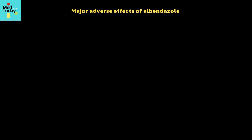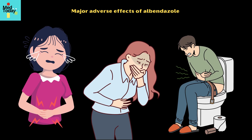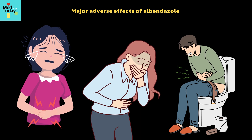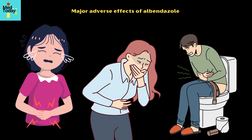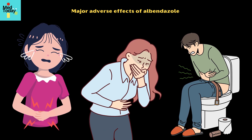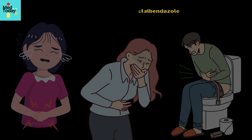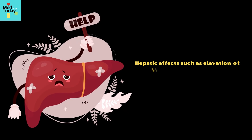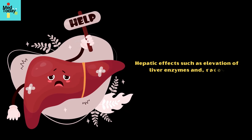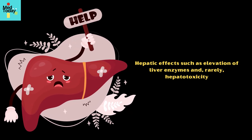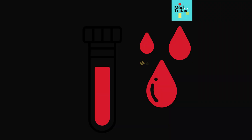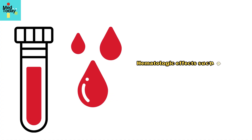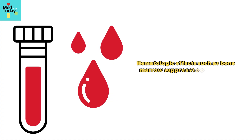Major adverse effects of albendazole include the following. Gastrointestinal effects such as abdominal pain, nausea, vomiting, and diarrhea. Hepatic effects such as elevation of liver enzymes and, rarely, hepatotoxicity. Hematologic effects such as bone marrow suppression, leading to neutropenia or pancytopenia.